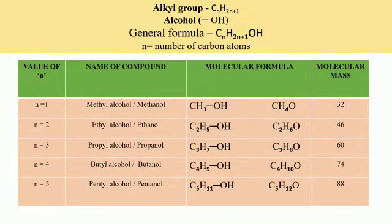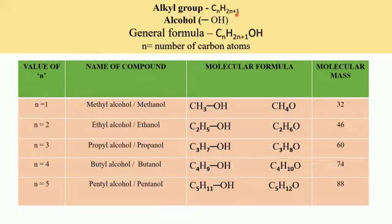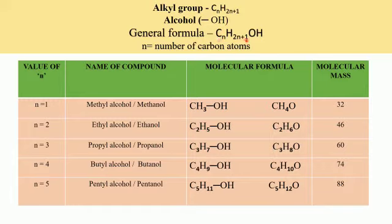Let us now take up one example of a homologous series — the homologous series of alcohol. Alcohol is a functional group designated as OH. For this we will need the alkyl group, that is CnH2n+1, which has one hydrogen atom less compared to the corresponding alkane. The place of this hydrogen is taken up by the alcohol functional group. So the general formula becomes CnH2n+1OH, where we attach the functional group to the alkyl group.